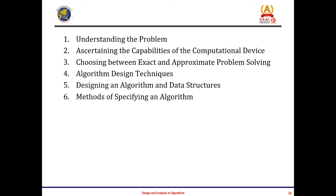The next step is methods of specifying an algorithm. There are mainly two options: the first is use of natural language or what we call pseudocode — a mixture of natural language and programming language-like constructs — and the second is flowcharts, which is a method of expressing an algorithm by a collection of connected geometric shapes.